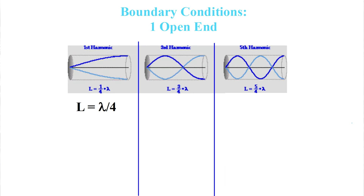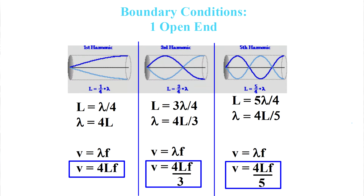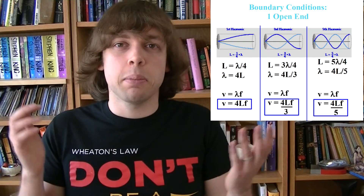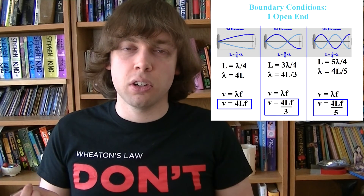One closed end and one open end, like a clarinet, is different. The first harmonic contains a quarter of a wavelength, so L equals lambda over four. Using the wave speed equation to substitute in for wavelength, the equation comes out as V equals 4LF. Following the same process, the next two harmonics give additional equations. We call them the third and fifth harmonics because they correspond to three-quarter and five-quarter wavelengths, but that's really just a naming pattern — it's arbitrary. You could call them the first, second, and third harmonics and everyone would understand.